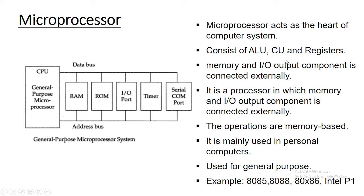Since the CPU chip alone doesn't include memory and other input/output components, to make a complete system we have to connect all those components externally to the microprocessor. It is similar to a motherboard, where at the center there is a CPU processor and other components are attached externally — like hard disk, fan, extension cards, and so on.